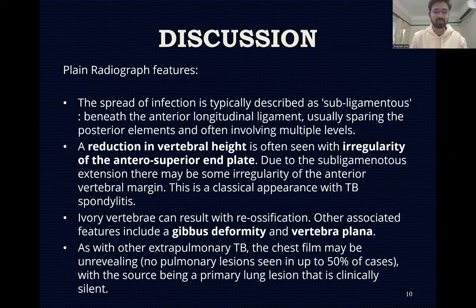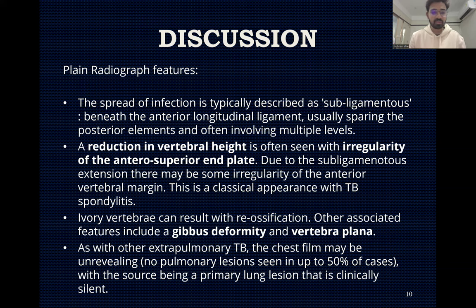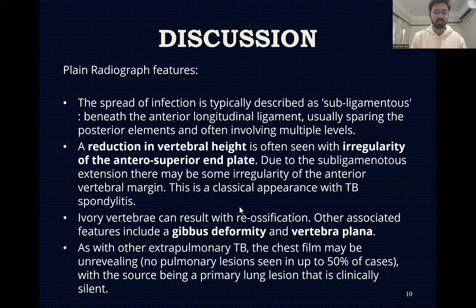Discussion — plain radiograph features: The spread of infection is typically described as subligamentous, beneath the anterior longitudinal ligament, usually sparing the posterior elements and often involving multiple levels. Reduction in vertebral height and irregularity of the anterior superior end plate due to subligamentous extension are often seen. There may be irregularity of the anterior vertebral margin — a classical appearance with TB spondylitis. Ivory vertebra can result from re-ossification. Other associated features include gibbus deformity and vertebral plana. As with other extra-pulmonary TB, the chest film may be unremarkable, with no pulmonary lesions seen in up to 50% of cases.